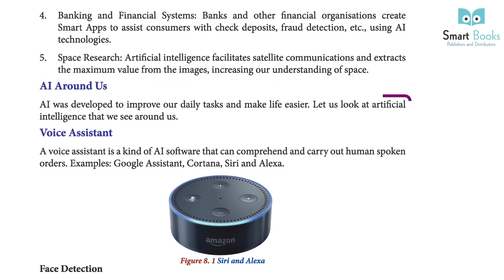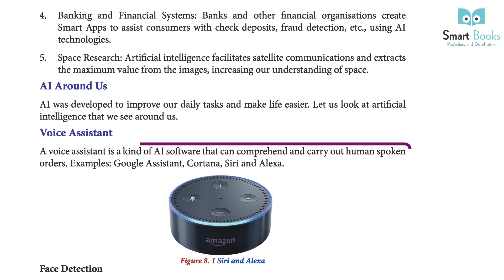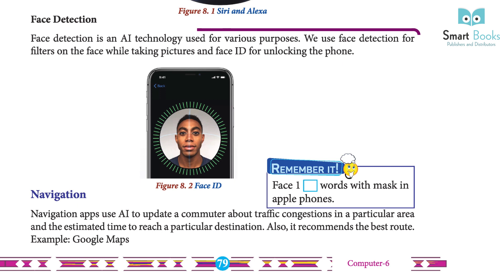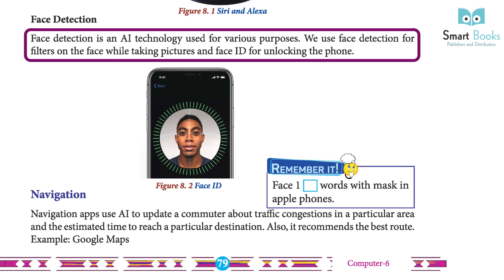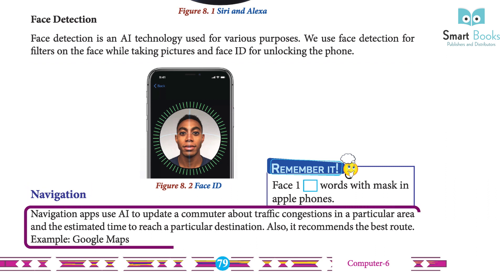AI Around Us: AI was developed to improve our daily tasks and make life easier. 6. Voice Assistant: A voice assistant is a kind of AI software that can comprehend and carry out human-spoken orders. Examples include Google Assistant, Cortana, Siri, and Alexa. 7. Face Detection: Face detection is an AI technology used for various purposes. We use face detection for filters on the face while taking pictures and for face ID for unlocking the phone. Navigation: Navigation apps use AI to update a commuter about traffic conditions in a particular area and the estimated time to reach a particular destination. It also recommends the best route, e.g., Google Maps.